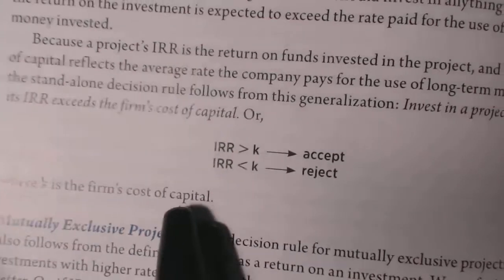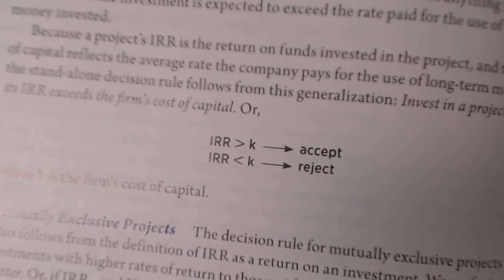If your internal rate of return happens to be greater than the interest rate, it's hard to see, it says if the IRR is greater than the interest rate, then you're going to accept it. If the IRR is less than the interest rate, then you're going to reject it.